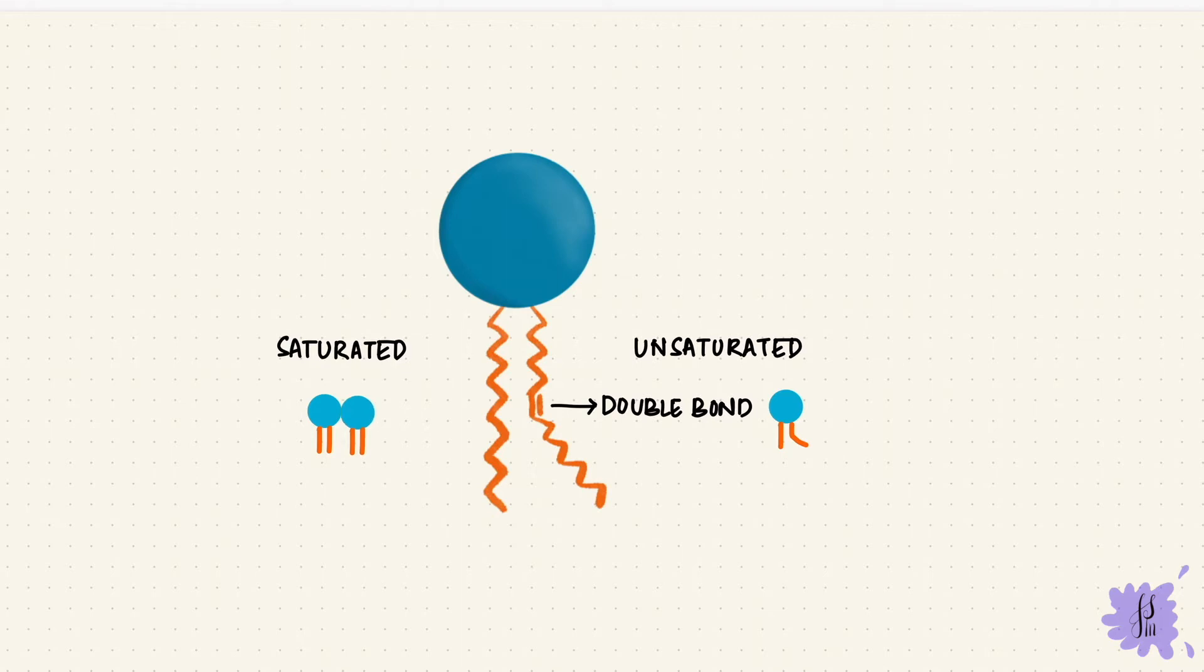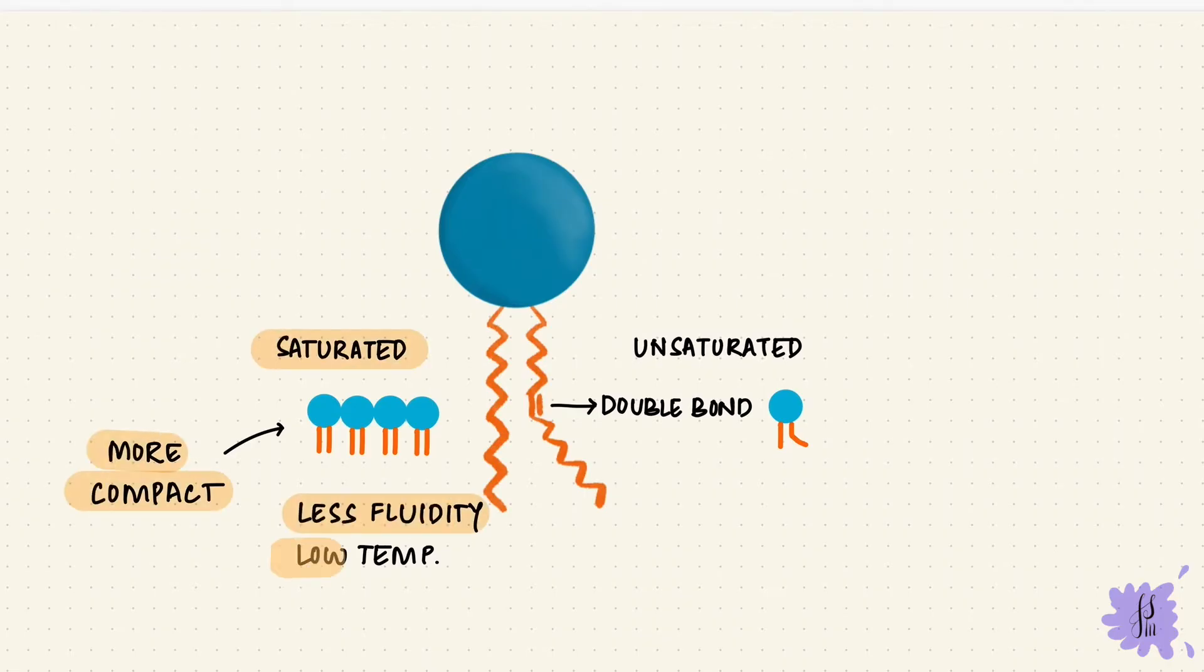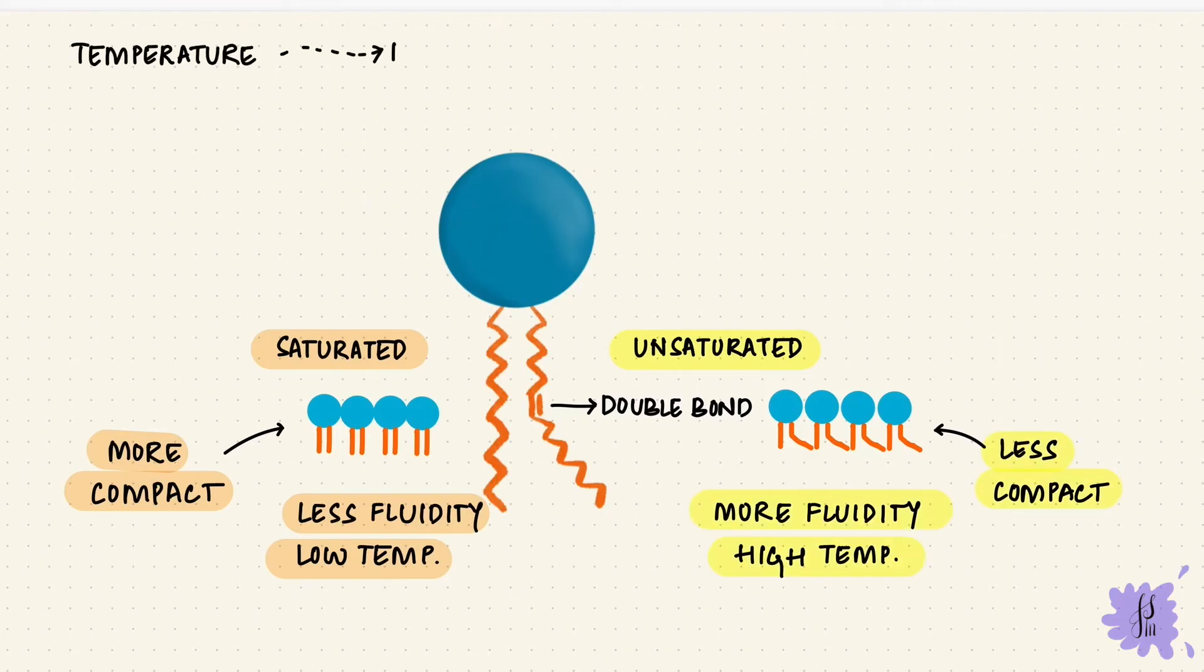If there are more saturated fatty acids close together, it becomes more compact, lowering the fluidity of the membrane. This can happen with lower temperature. If there are more unsaturated fatty acids, the bends in the chain stop the phospholipids from becoming compact, increasing the fluidity of the membrane. This can happen at higher temperatures. Temperature can affect the fluidity of the membrane, and fluidity in turn affects its permeability.